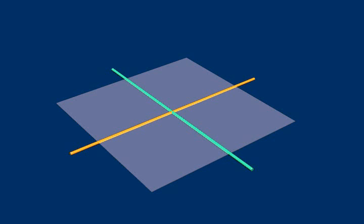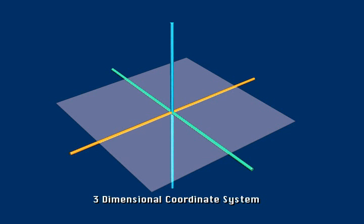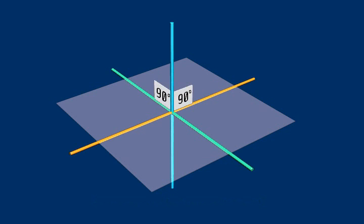Suppose that we want to expand our coordinate system to a full three-dimensional system. Now in order to add a third dimension, all that is needed is a third axis line. This axis line is perpendicular to the first two lines. We will call this axis line the z-axis.